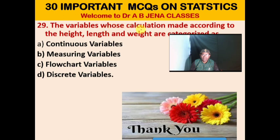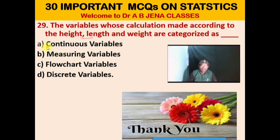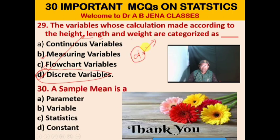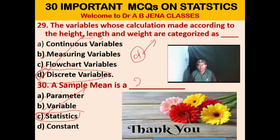Next MCQ: The variables whose calculation is made according to height, length, and weight are categorized as what? D is the right option for this MCQ. Sample mean is a statistic. These are all about 30 vital MCQs from business statistics.